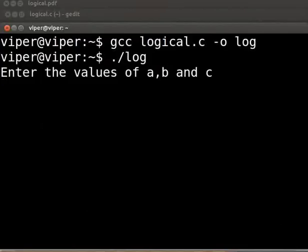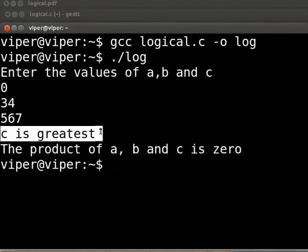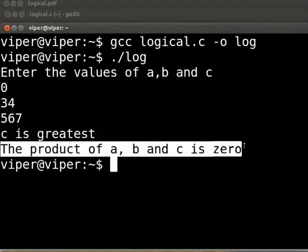I will enter the values as 0, 34 and 567. The output is displayed. C is greatest and the product of a, b and c is 0. You should try executing this program with different sets of inputs.